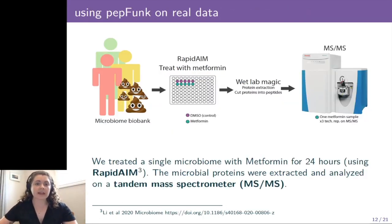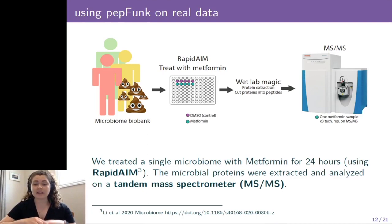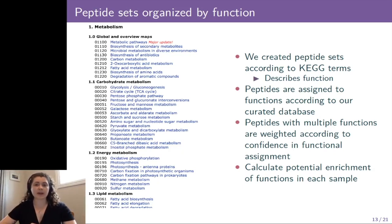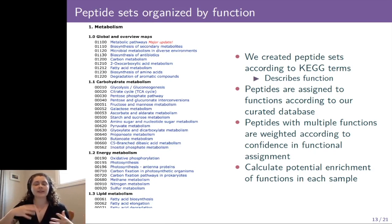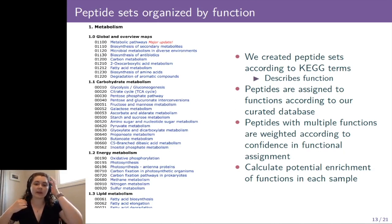The dataset I'm going to show today is from a single microbiome that was treated with metformin, which is a drug commonly used to treat diabetes. We treated the single microbiome with metformin for 24 hours using our published assay called Rapidame. After this treatment, we extract proteins, cut those proteins into peptides, and analyze them on a tandem mass spectrometer. After we detect the peptides with our mass spec, we create peptide sets according to their KEGG terms, which describe their functions — in this case, different types of metabolism. These peptides are assigned to functions according to our own in-house curated database, and we weight peptides with multiple functions according to our confidence in their functional assignment.